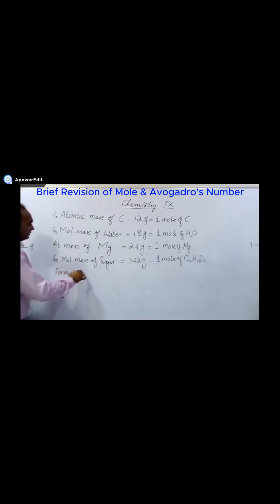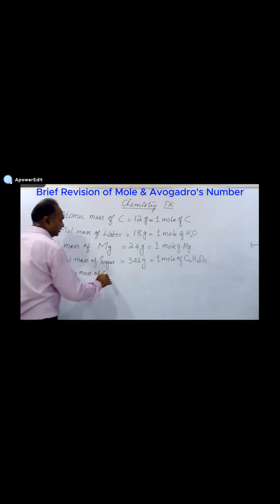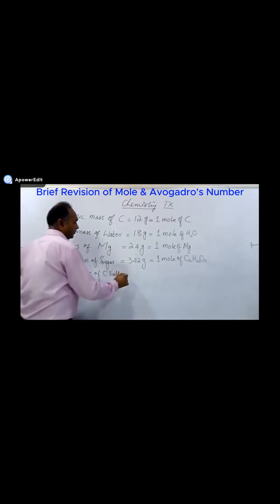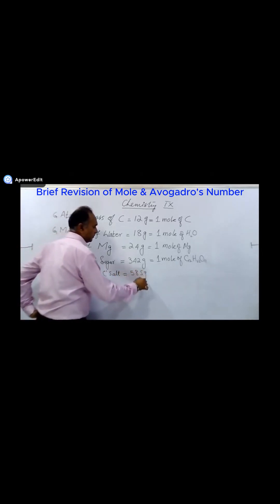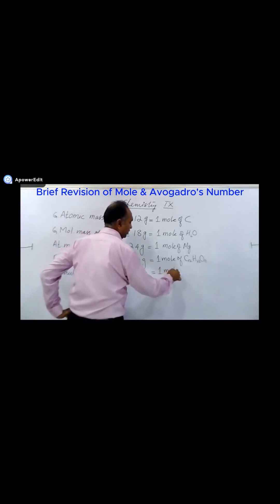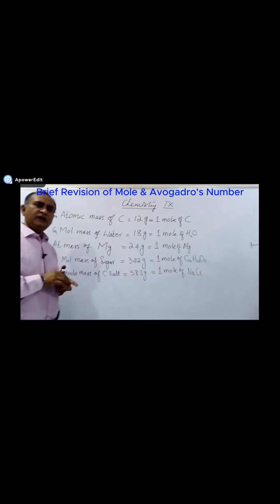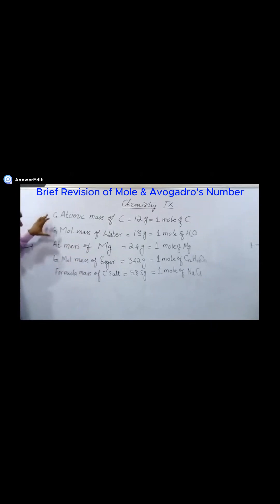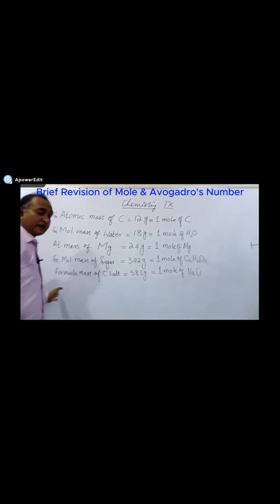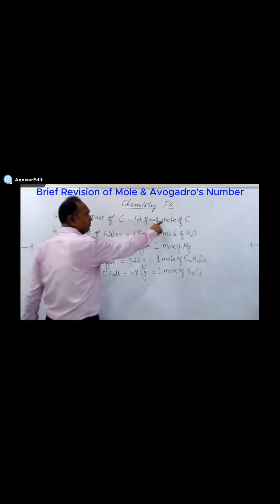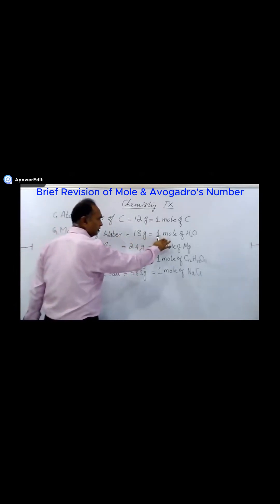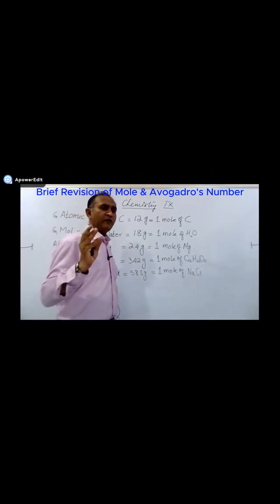The formula mass of common salt, NaCl, is 58.5 grams — we call that one mole of NaCl. So we have covered atoms, molecules, and ionic compounds. Carbon and magnesium are atoms; water and sugar are molecular compounds; NaCl is an ionic compound, which is why we write formula mass rather than molecular mass. Atomic mass, molecular mass, or formula mass expressed in grams is called one mole.